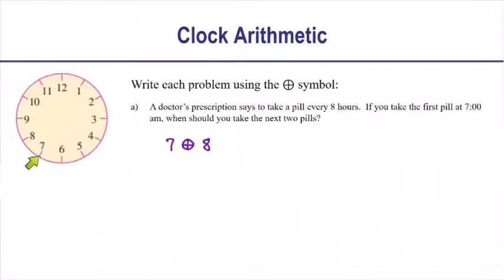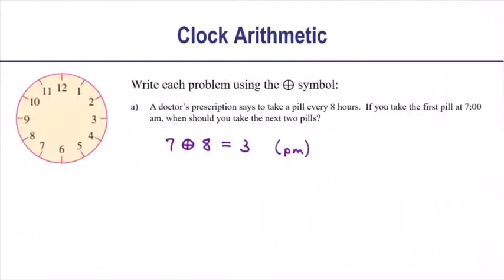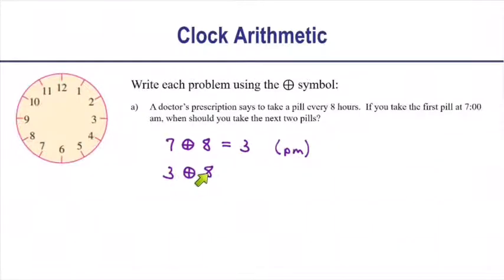Let's count on the clock face. We start at 7 and add 8, counting 1, 2, 3, 4, 5, 6, 7, 8 — so 7 circle-plus 8 is 3, and of course that's p.m. For the second pill, we start at 3 and add 8 again. Starting at 3 o'clock and going 8 more hours, counting 1, 2, 3, 4, 5, 6, 7, 8 — so 3 circle-plus 8 is 11, still p.m.